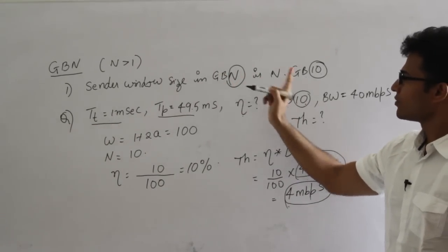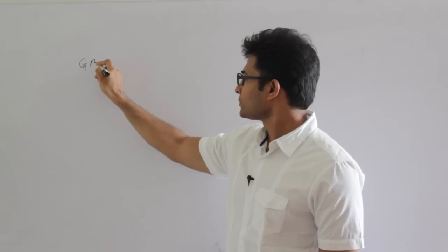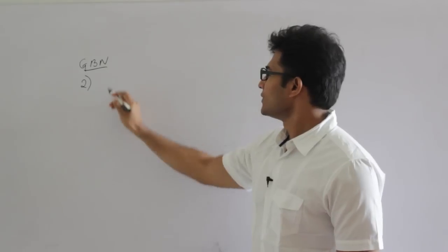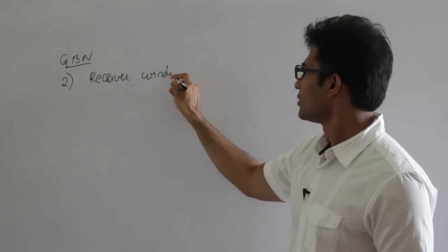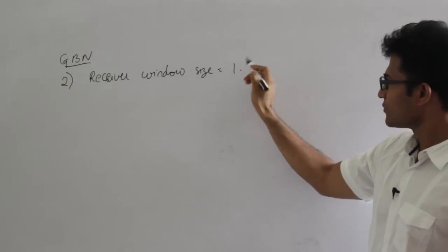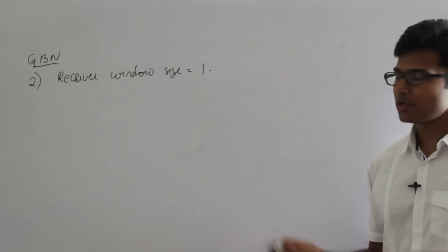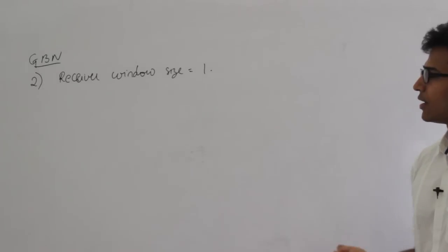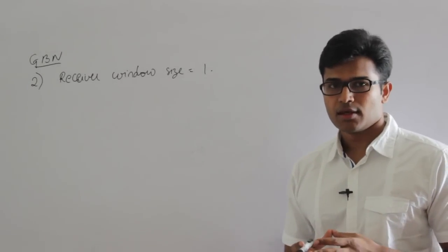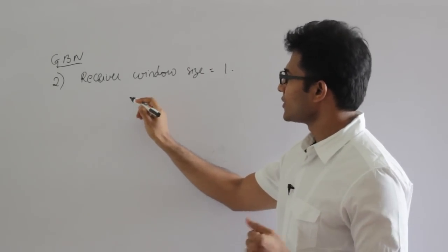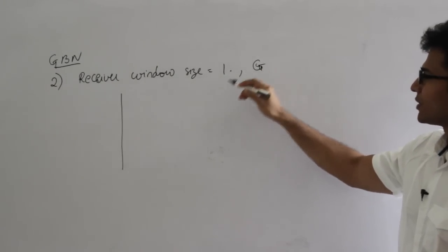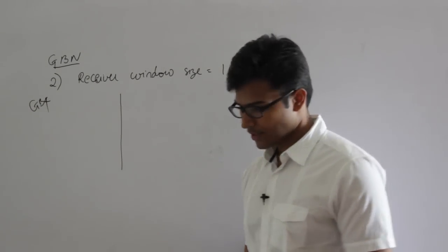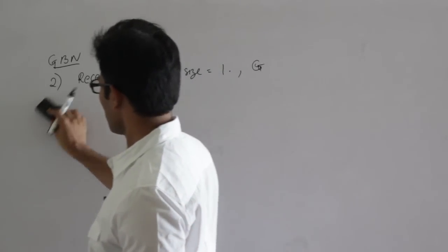So first point is: sender window size is N in Go Back N. Now let's see the second point. Point number 2 is receiver window size. In Go Back N, receiver window size is always 1. This is the first time we are talking about receiver window size. Why should receiver window size always be 1? Let me show you with an example where sender window size is 4, meaning it is Go Back 4, and receiver window size is 1.